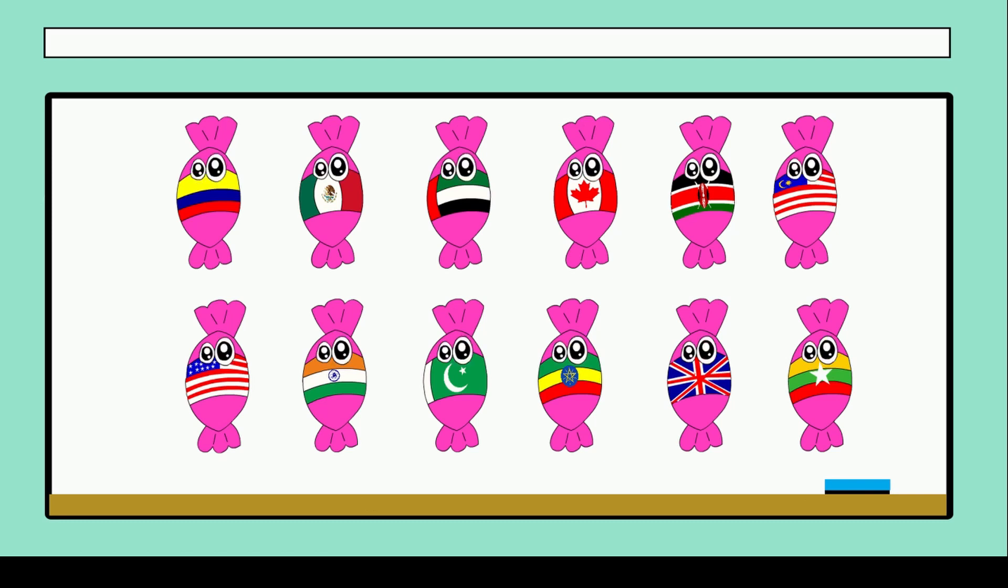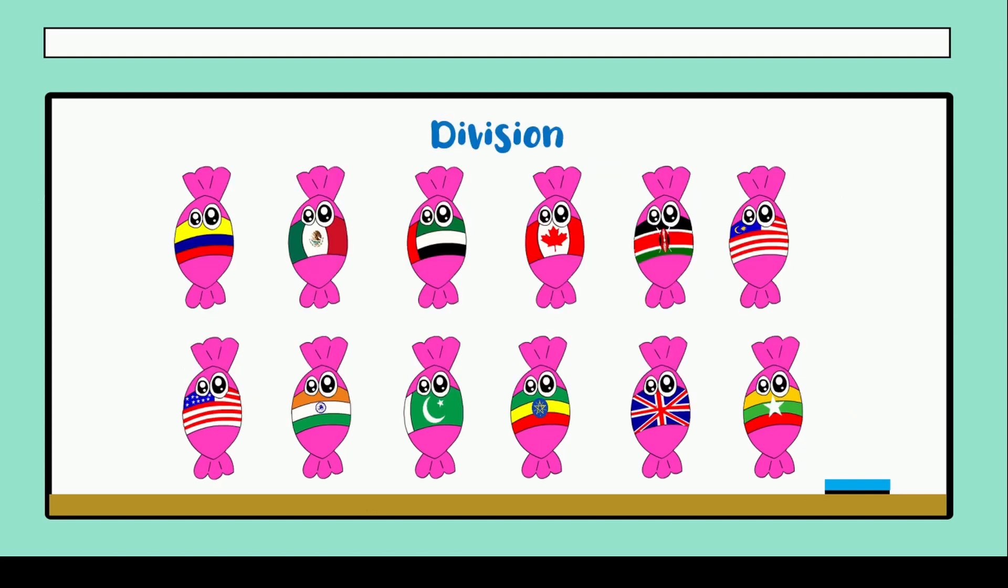So let's start with the topic. As I told you, we will work with division. So for that reason we have 12 candies. The word problem is about six students and I want to give some candies. How many candies will each one have? But the idea is that each student gets the same amount of candies.